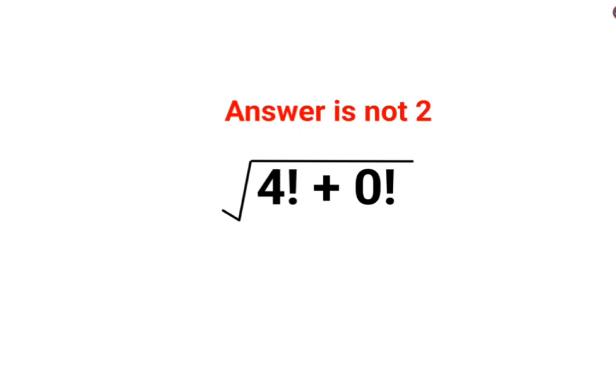Please understand whenever you have an exclamation mark ahead of a number. Remember, this is basically a product of all the integers in the decreasing order till the value of 1. So here this becomes what? 24 and 0 factorial is just 1.